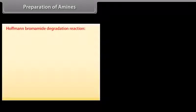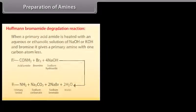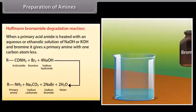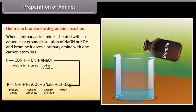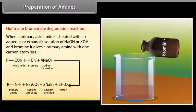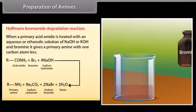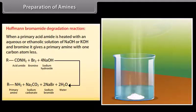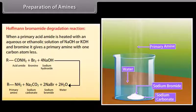Hofmann bromamide degradation reaction: When a primary acid amide is heated with an aqueous or ethanolic solution of NaOH or KOH and bromine, it gives a primary amine with one carbon atom less.